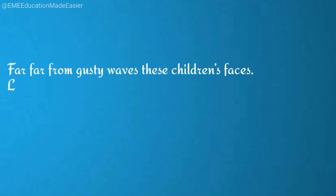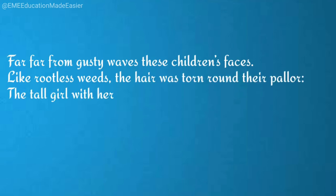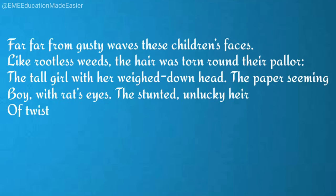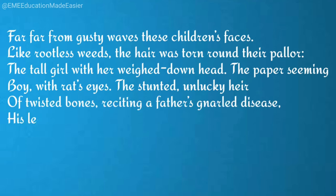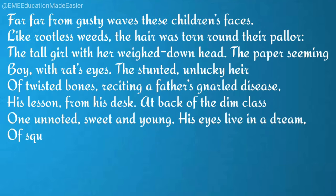The first stanza goes: 'Far, far from gusty waves, these children's faces like rootless weeds. The hair was torn round their pallor. The tall girl with her weighed-down head. The paper-seeming boy with rat's eyes. The stunted, unlucky heir of twisted bones. Reciting a father's null disease. His lesson from his desk. At back of the dim class, one unnoted, sweet and young. His eyes live in a dream of squirrel's game in a tree room.'